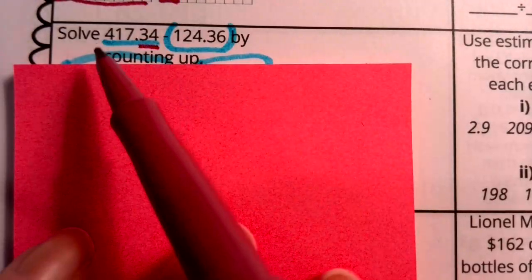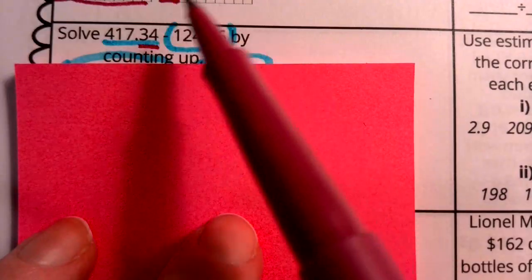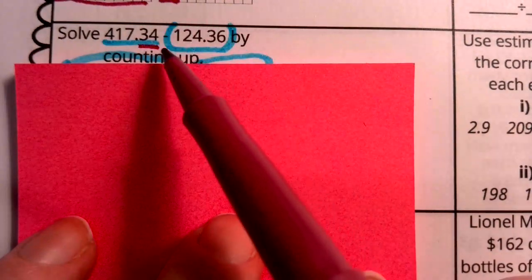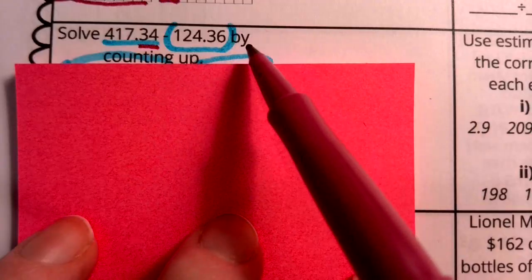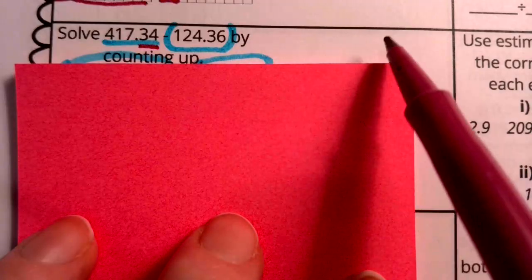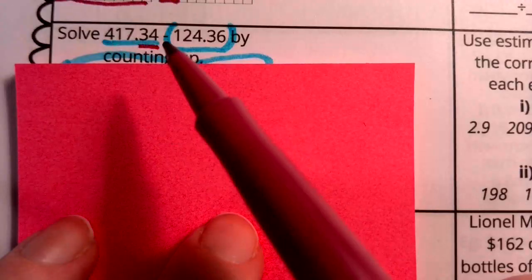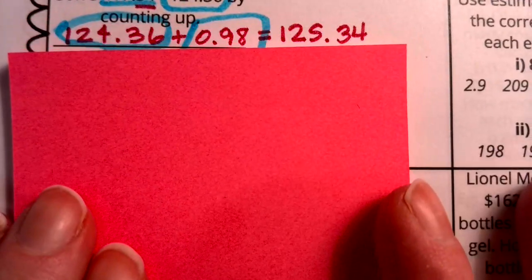we need to understand it well enough to be able to find an answer to a question like that. So really, boys and girls, remember this almost as a map. This is our starting point, this is our destination. So we're going to start with this value, 124 and 36 hundredths, and we're going to add values until we get all the way up to the destination, which is 417 and 34 hundredths.